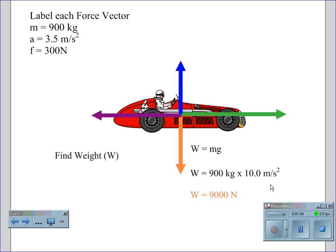which gives us a weight for this automobile of 9,000 newtons. Weight is negative because it acts downward.